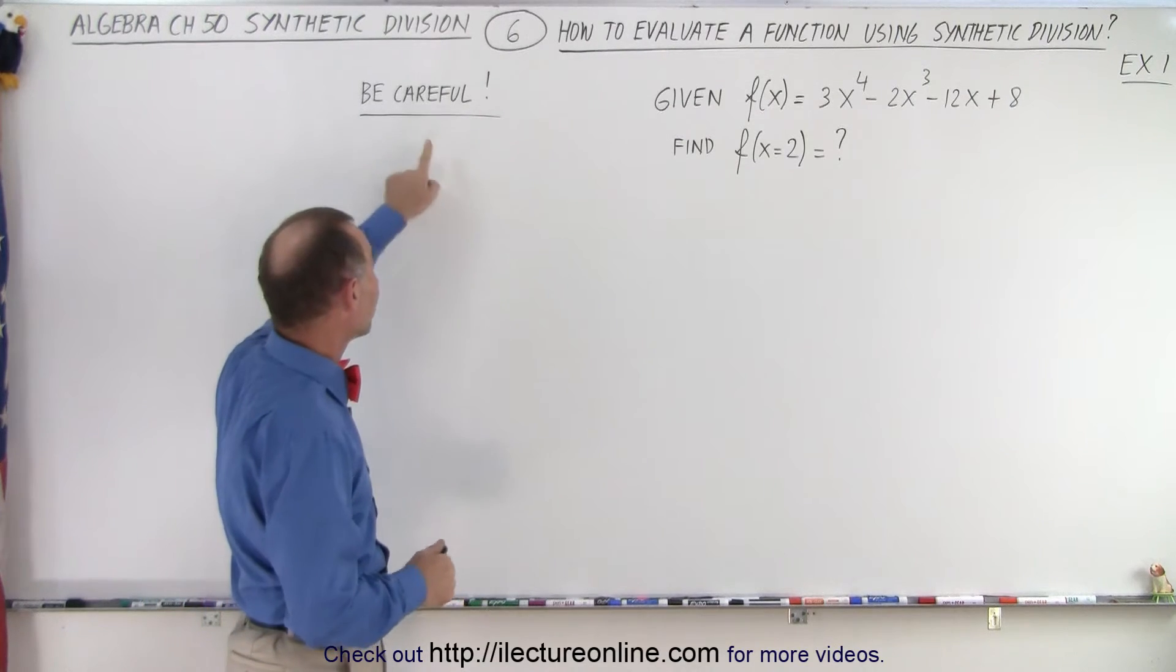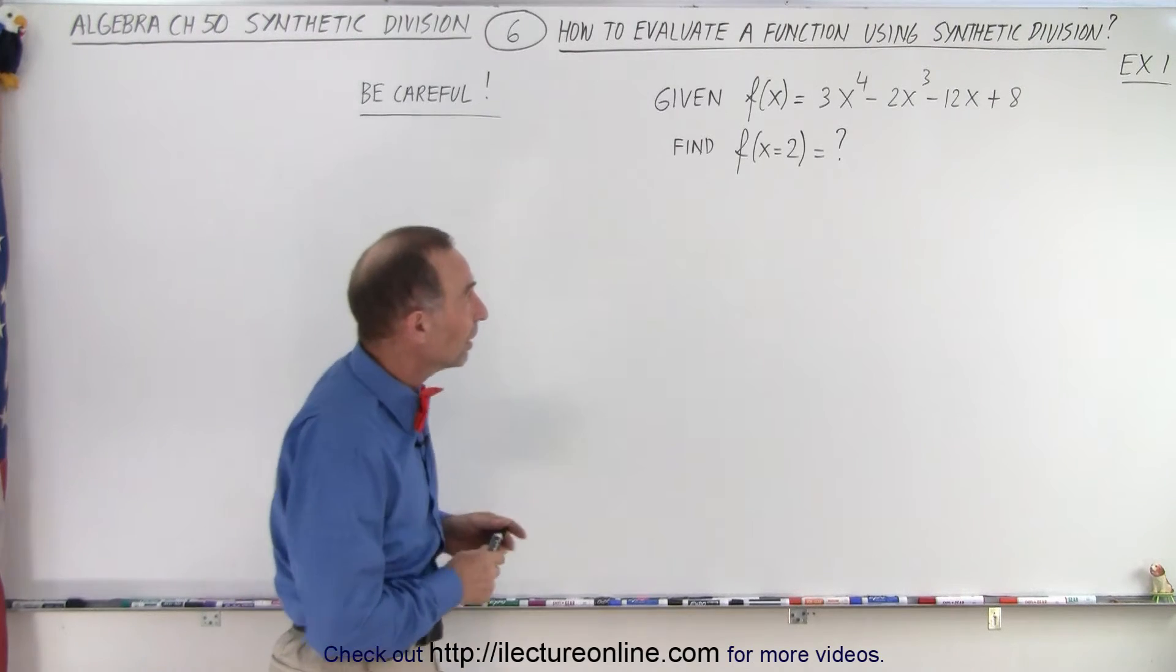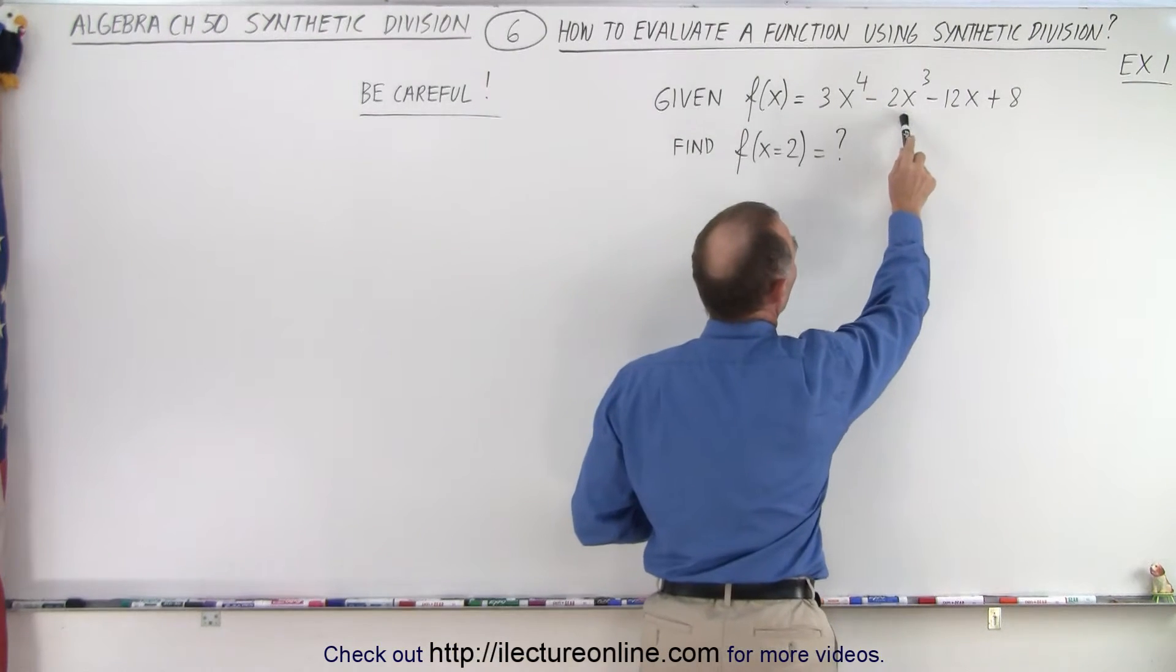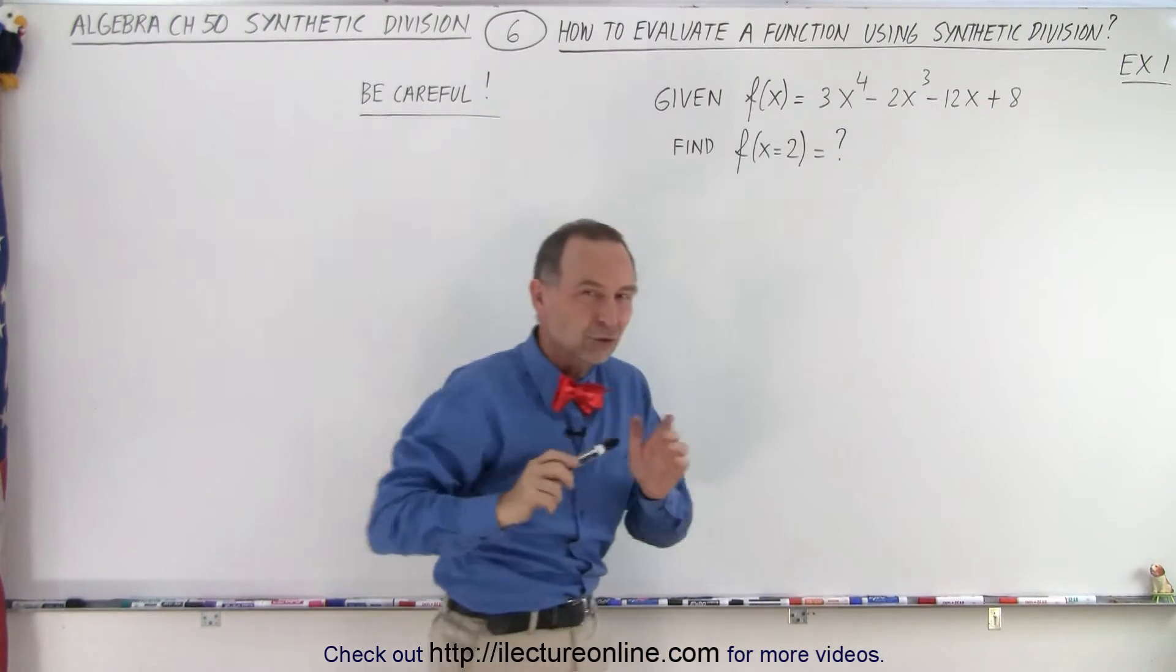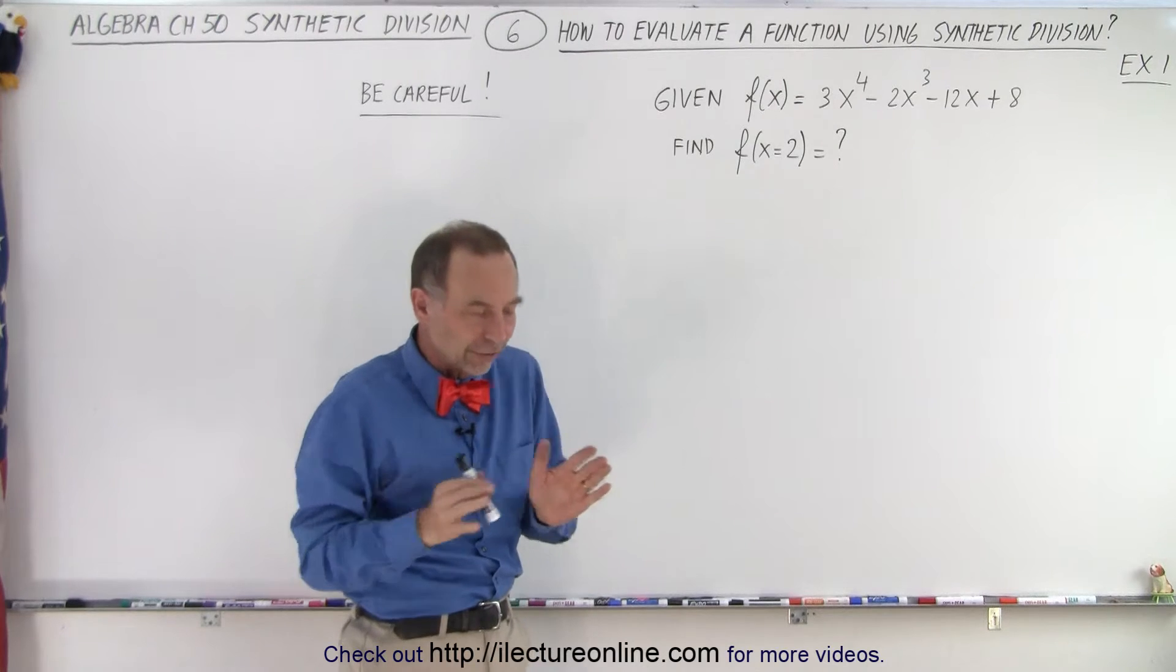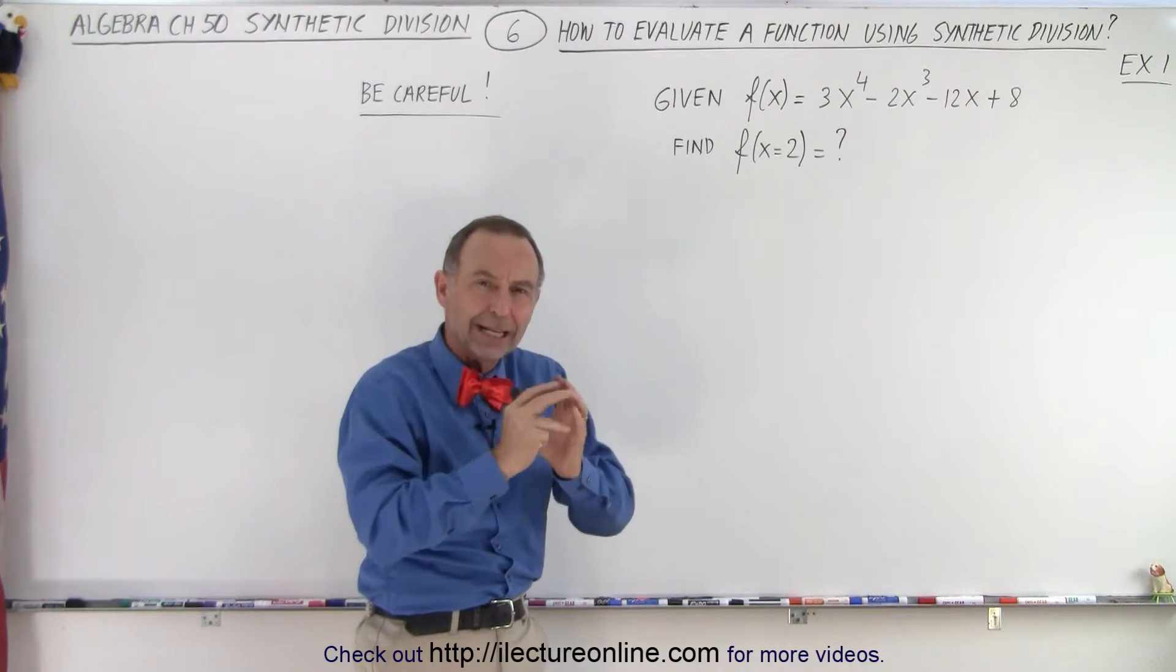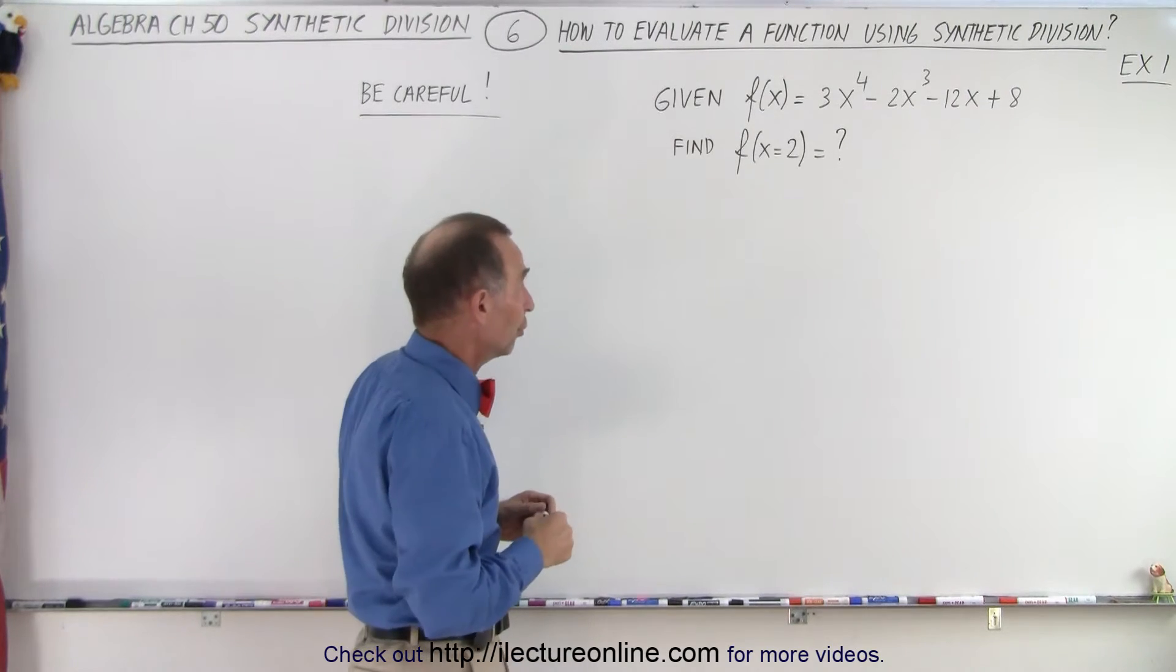But notice I put the words be careful because something is different about this function. Notice it is 3x to the fourth minus 2x cubed minus 12x plus 8. It's missing the x squared term. And with synthetic division just like with longhand division if there's a missing term you have to put in a placeholder for that missing term. In this case it's 0 because there are 0x squared terms.